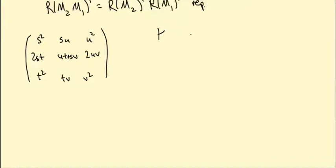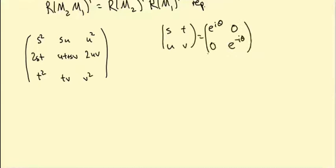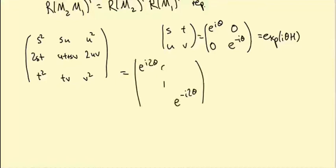We're looking at group elements first. Taking s, t, u, v to be exp(iθH), i.e., the diagonal matrix e^{iθ}, 0, 0, e^{-iθ}, a lot of entries are zero, and we end up with e^{2iθ}, 1, e^{-2iθ} on the diagonal and zeros elsewhere. So we see that a has weight 2, c has weight −2, and b has weight 0.